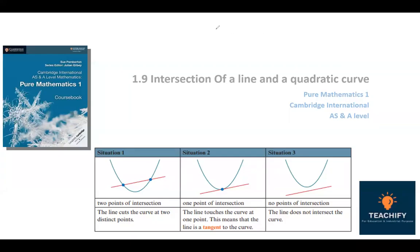This lecture covers the intersection of a line and a quadratic curve. It is a continuation of the previous 1.8 lecture. From the previous lecture, we found that the value of the discriminant, b squared minus 4ac, depends on and describes the nature of the roots. When the discriminant is less than, greater than, or equal to zero, the graphs and points of intersection change accordingly.